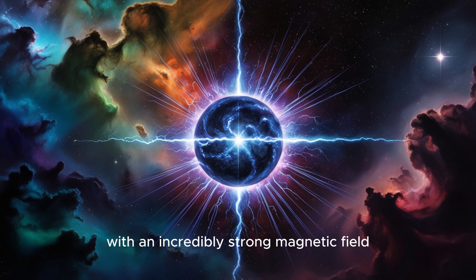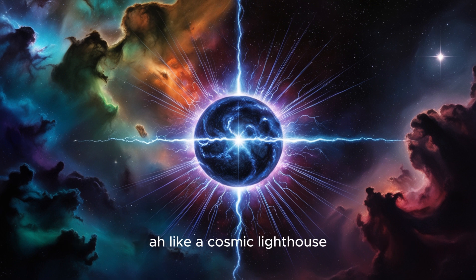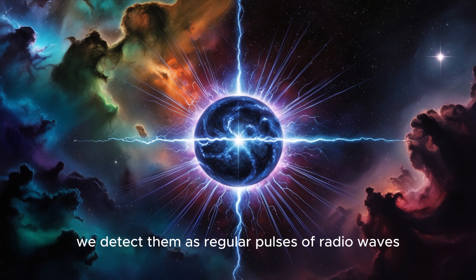So how do we even know they exist? That's where pulsars come in. Picture a neutron star with an incredibly strong magnetic field, like a giant bar magnet spinning in space. As it spins, beams of radiation shoot out from its magnetic poles. Like a cosmic lighthouse sweeping its beam across the universe.